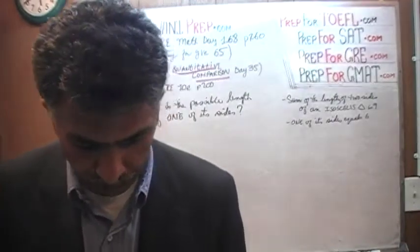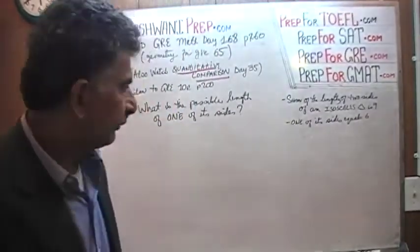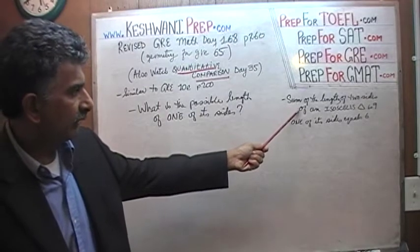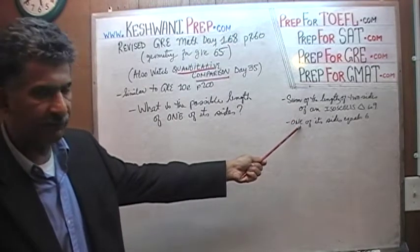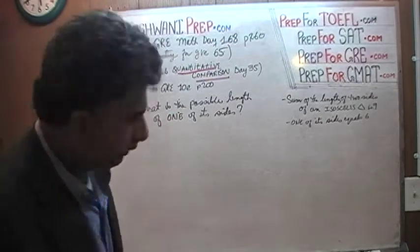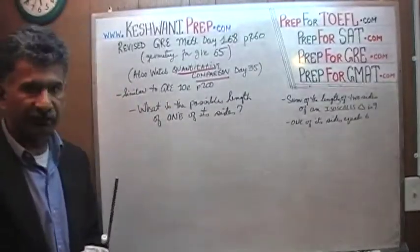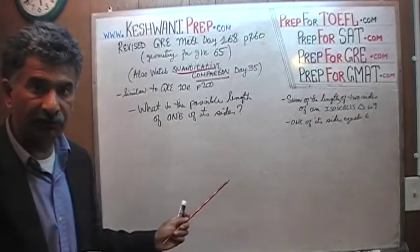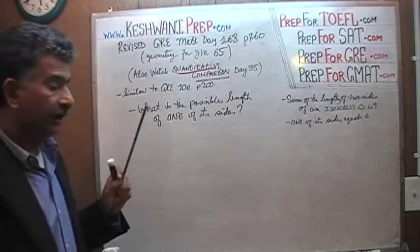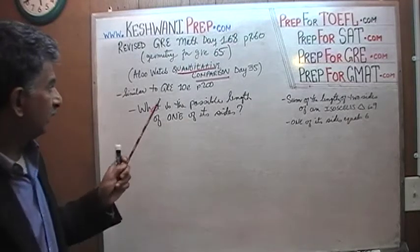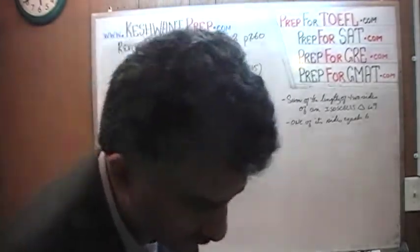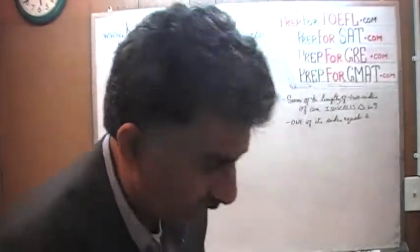Yesterday we solved the problem which is still on the blackboard. It says the sum of the length of the two sides of an isosceles triangle is 9, and one of its sides is equal to 6. The question asked: what is the possible value of one of its sides? That quantitative comparison question was based on the format of a question that appeared on page 200 of the 10th edition — I forgot to mention that yesterday. It was derived from that idea.